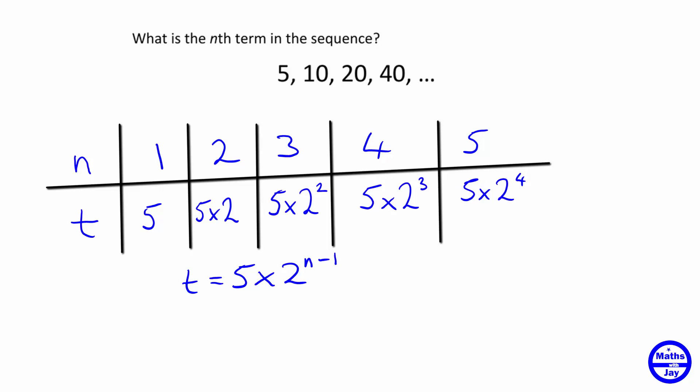So we could check that out. If we put in n is 1, we get 5 times 2 to the power of 0, and 2 to the power of 0 is 1, so it's just 5. If we put in n is 2, we get 5 times 2 to the power of 2 minus 1, so 5 times 2, and that looks fine.